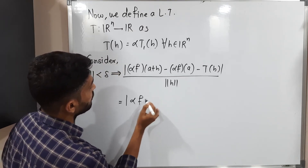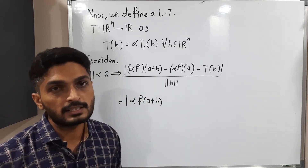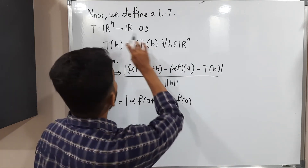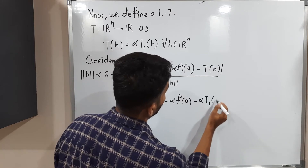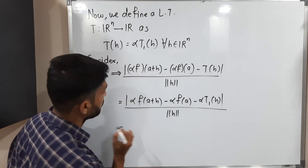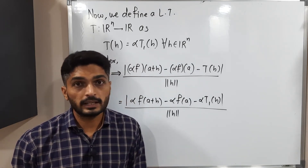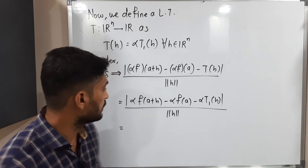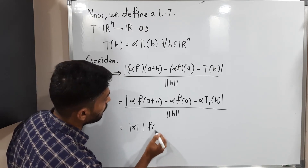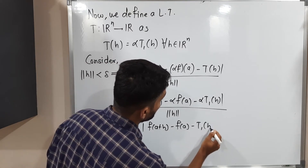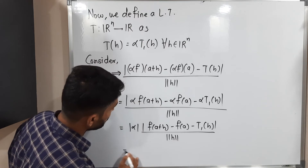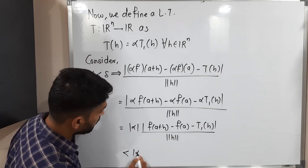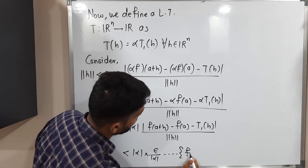Simplifying: this equals |α·F(A+H) − α·F(A) − α·T1(H)| divided by norm(H), since T = α·T1. We can take α as a common factor and separate the modulus, giving |α| · |F(A+H) − F(A) − T1(H)| divided by norm(H). From statement star, the inner expression is less than ε/|α|, so this is less than |α| · (ε/|α|).